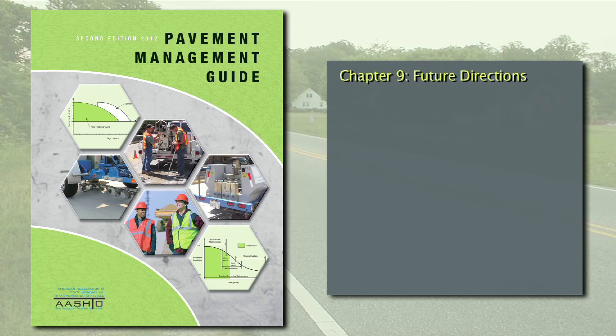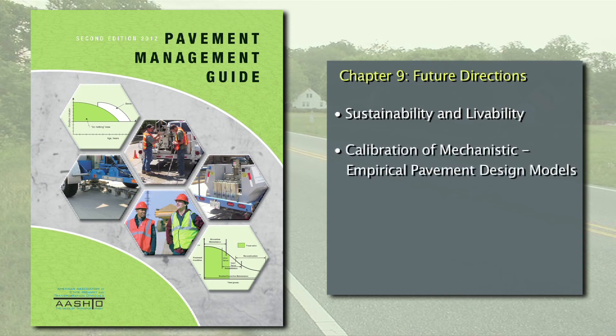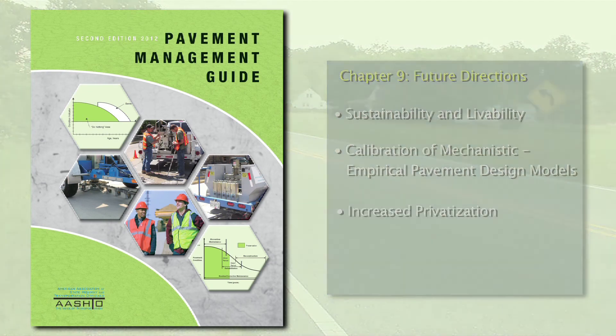Chapter 9, titled Future Directions, summarizes the evolving issues that should be addressed to keep pavement management viable, including national initiatives in sustainability and livability, support for the calibration of the mechanistic empirical pavement design models, and increased privatization of highway maintenance activities.